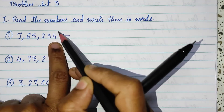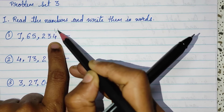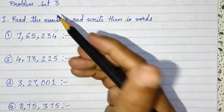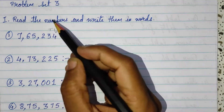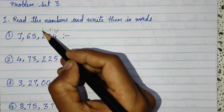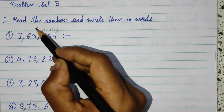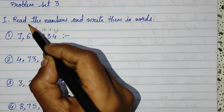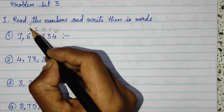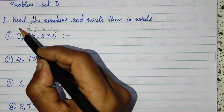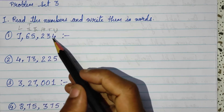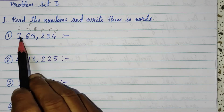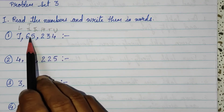From the last digit, this is your unit, tens, hundred, thousand, and then lakh. So this 6-digit number is said to be lakh.